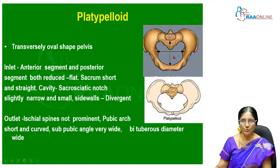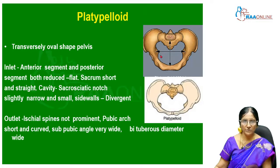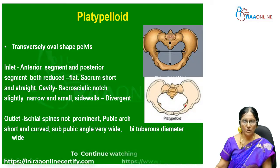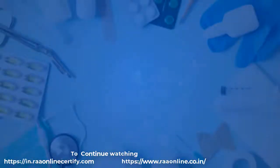The platypelloid pelvis is transversely oval-shaped. Both anterior and posterior segments of the inlet are reduced. The sacrum is flat, short, and straight. In the cavity, the sacrosciatic notch is slightly narrow and small, side walls are divergent, ischial spines are not prominent, pubic arch is short and curved, subpubic angle is very wide, and the bituberous diameter is also wide.